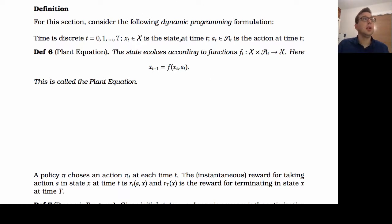So here we're going to give the definition of a dynamic program. We're going to let time be discrete from little t equals zero up to capital T. I'm going to let x of t be the state of the Markov chain at time t and a of t be the action that we decide to take at time t.